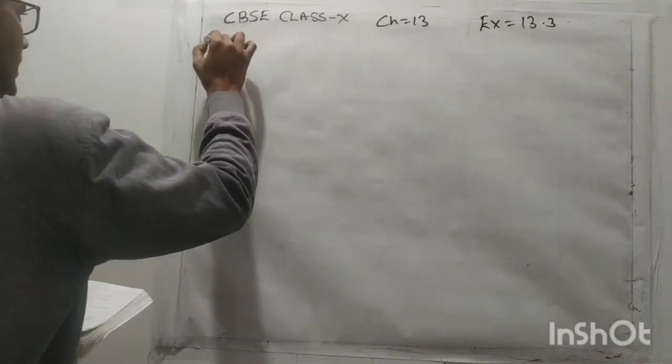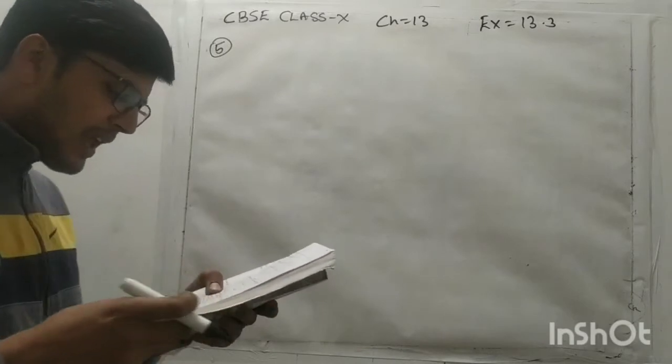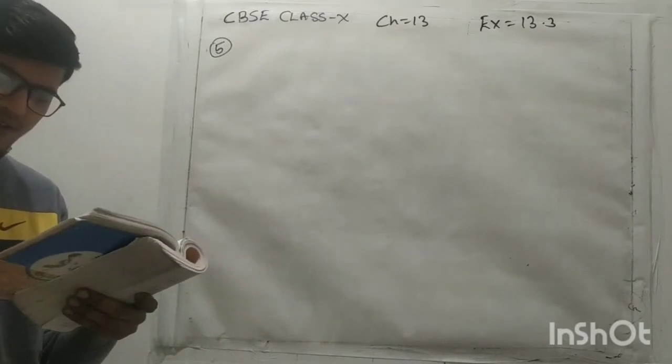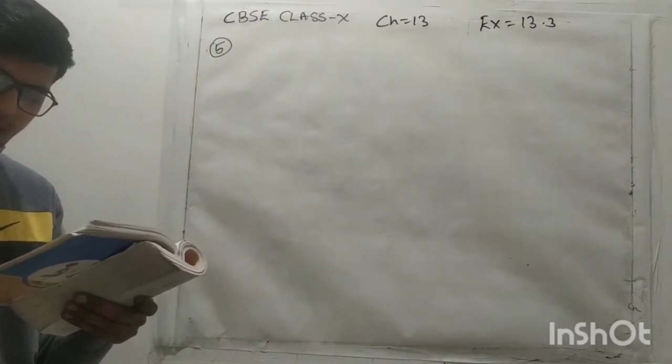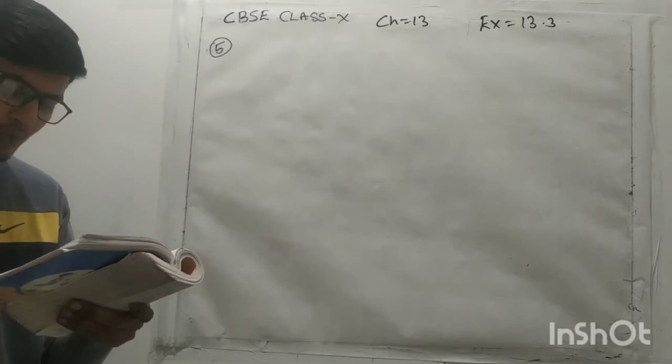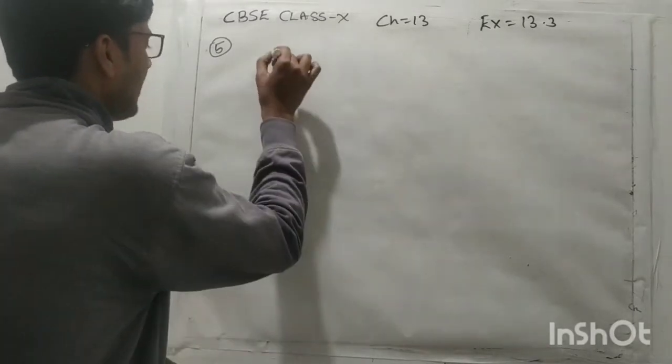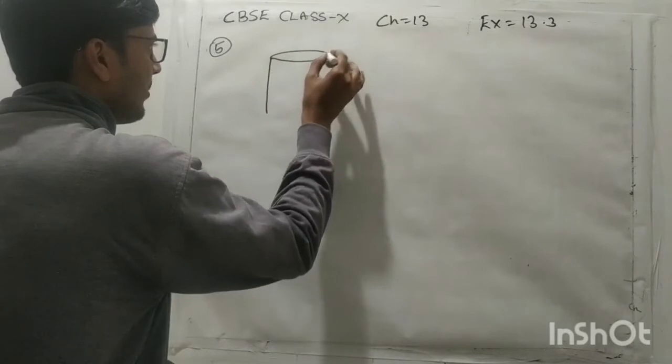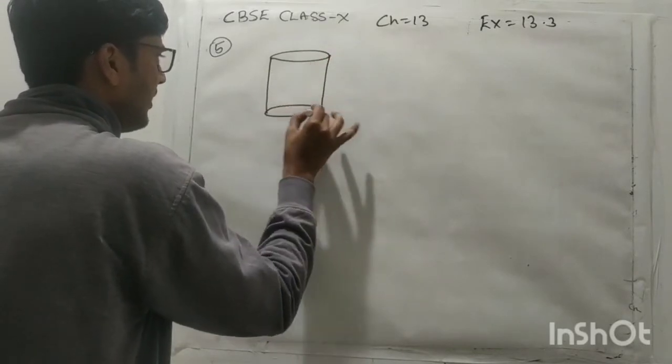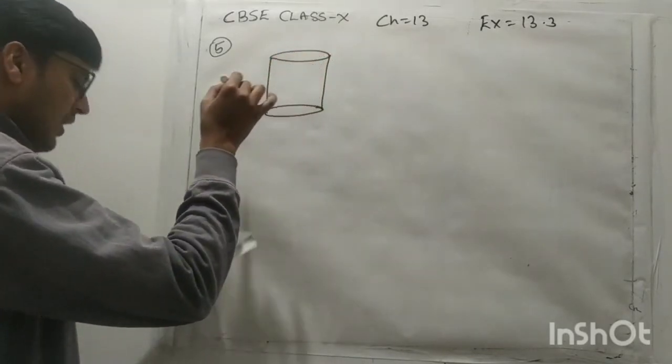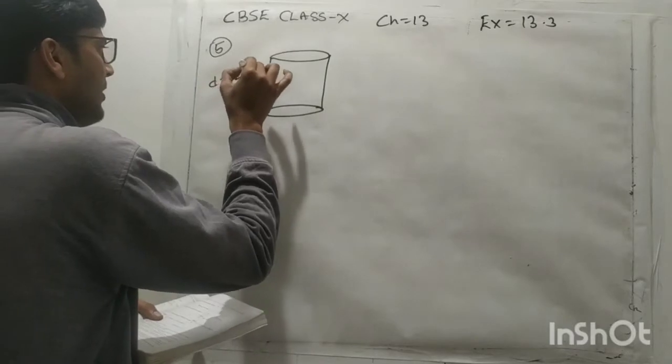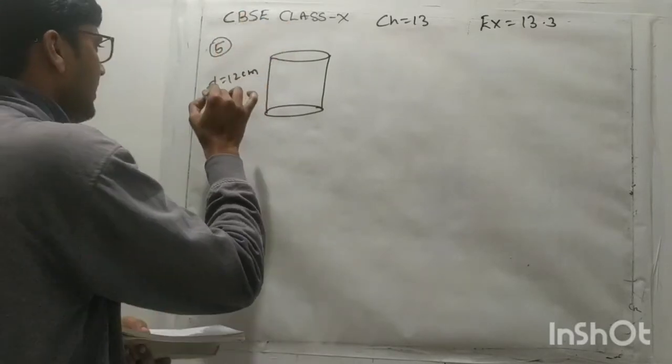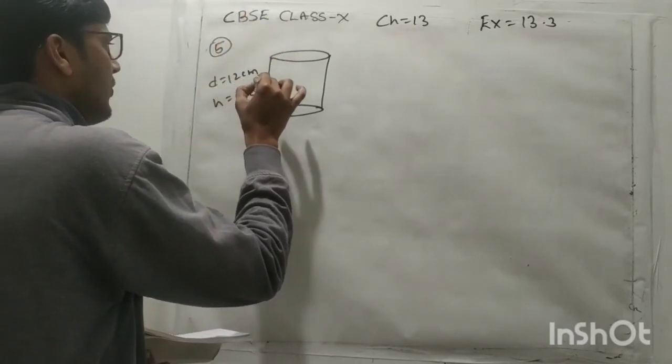Hello students, now question number 5 is a container shaped like a right circular cylinder having diameter 12 cm and height 15 cm is full of ice cream. The container is in the shape of a cylinder. This is the container in the shape of cylinder. Here diameter is 12 cm and height is 15 cm, it is for cylinder.